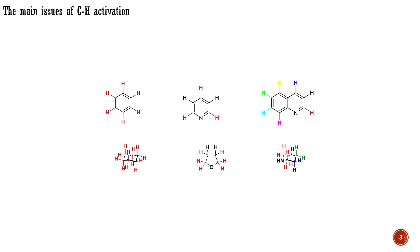The question is: how can we differentiate these CH bonds from each other when conducting a CH transformation? Another question is: what factors determine and control the reactivity of these systems? You will soon learn that under proper conditions, these systems can be quite active for CH transformations, and acceptable selectivities are achievable.